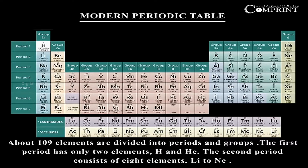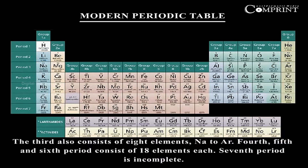The first period has two elements: hydrogen and helium. The second period consists of eight elements, Li to Ne. The third also consists of eight elements, Na to Ar. The fourth, fifth, and sixth periods each consist of 18 elements.